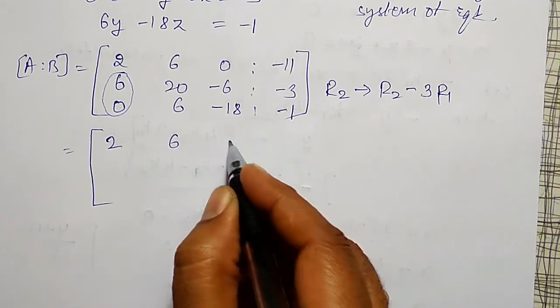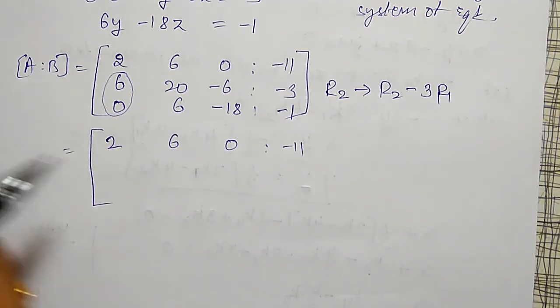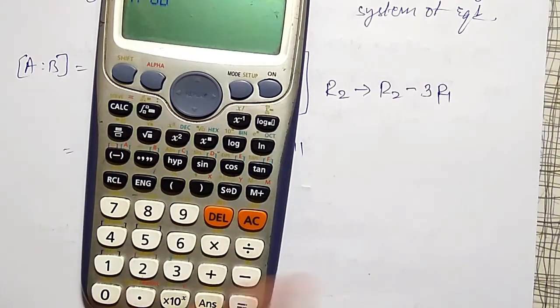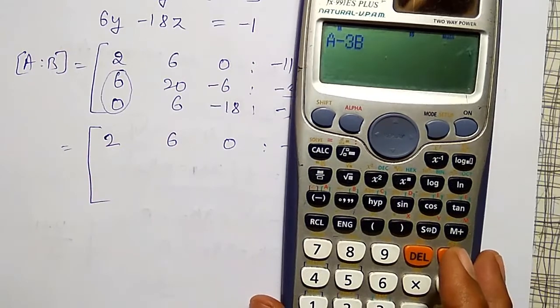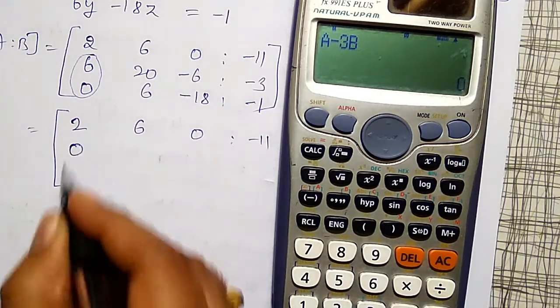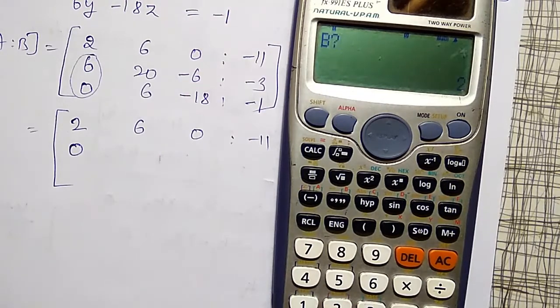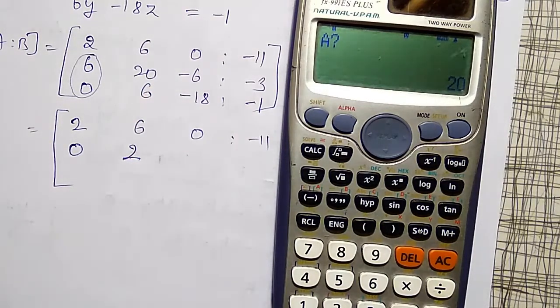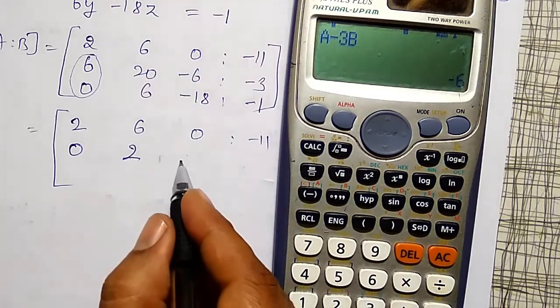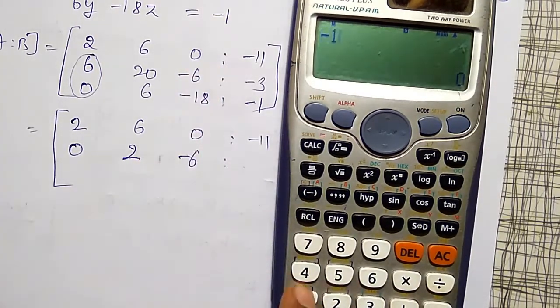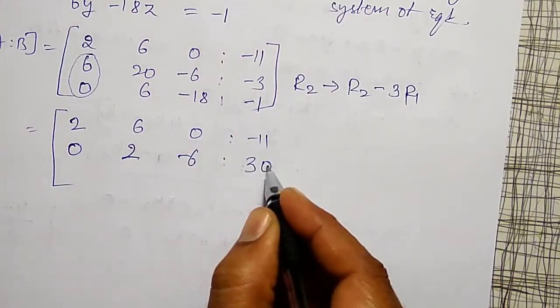First row as it is, 2, 6, 0, minus 11. To apply the second row operation, let me use the calculator for that. That is A minus 3 times B, so that I will not go wrong. A's limit is R2 element. A is 6, B corresponding R1 element 2, therefore it is 0. Next, A value is 20, corresponding B value is 6, therefore I am getting 2. Next, A value is minus 6, corresponding B value is 0, therefore minus 6 I am getting. Next, A is minus 3 and corresponding B value is minus 11, and its value is 30.